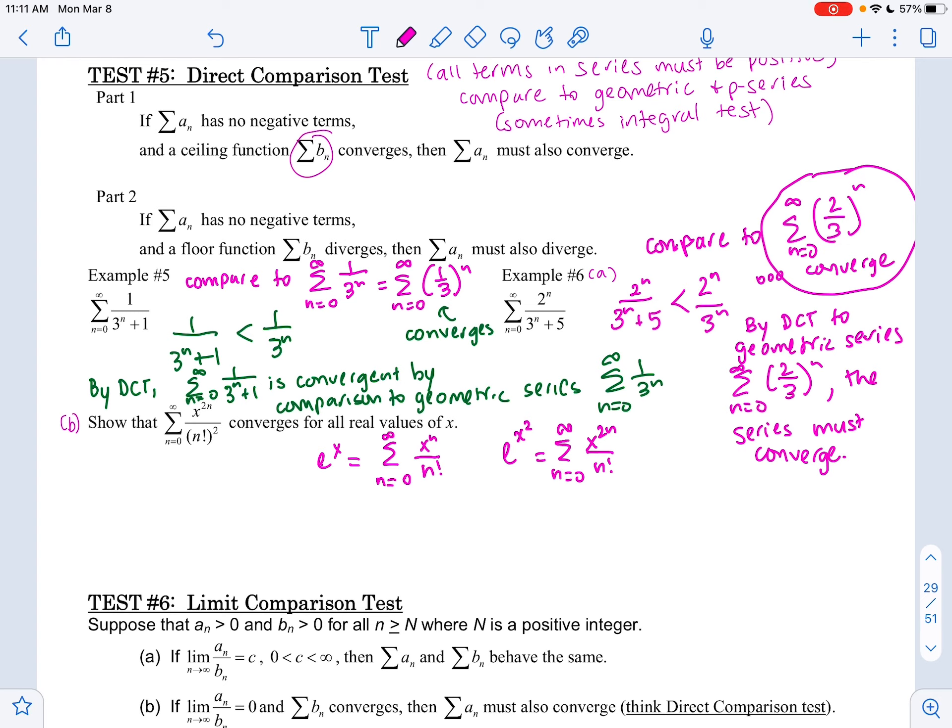And all I did was I changed the input for x to x squared. Both of these are e, and we know for e that they both converge for all real numbers of x, that the interval of convergence is negative infinity to infinity.